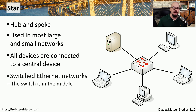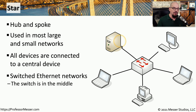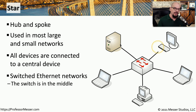For example, a switched ethernet network has the ethernet switch in the middle of this star. And then all of the devices run directly back to this particular switch. They're not connecting to each other — they're instead connecting back to the central switch in this star topology.